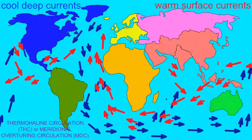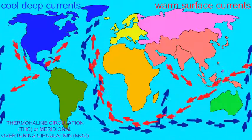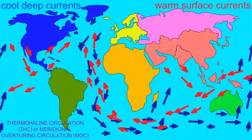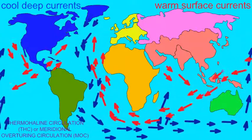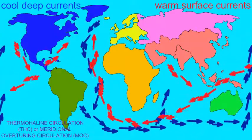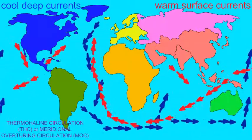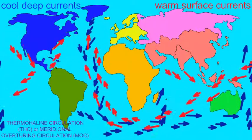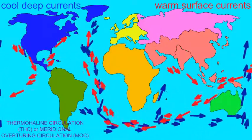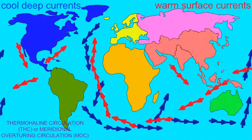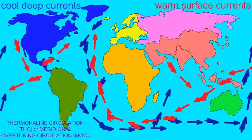In the world's oceans, there are masses of sea water which vary in their temperature, in their density, and in their salinity. And these variations can cause currents, such as the surface currents transporting warmer water, and the deeper currents transporting cooler water.